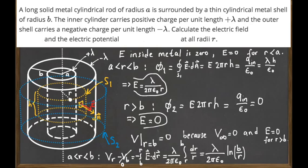The potential at any point on the surface of the inner metal cylinder is found by setting r equal to a in this expression. Furthermore, the potential is the same throughout the entire volume of the inner cylinder, because the electric field inside is zero — whatever potential we have at its surface is the same everywhere in the inner region.